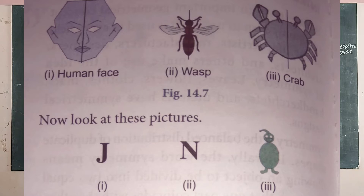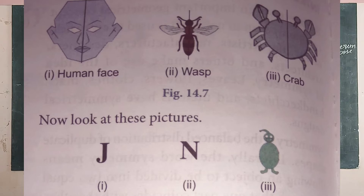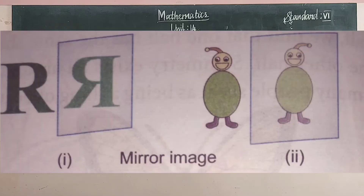Some English alphabets and some pictures do not have symmetrical figures — they do not have any kind of line symmetry. For example, the letter J and N — we cannot divide them with a horizontal or vertical line of symmetry. However, these letters do have reflection symmetry but not line of symmetry. See some mirror images: the letter R and a toy also reflecting — these are all called mirror images.